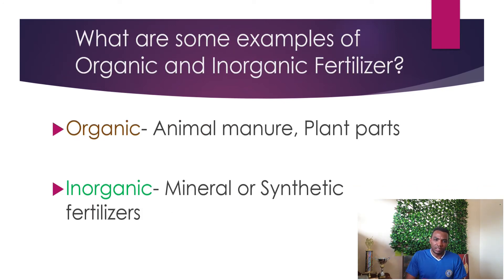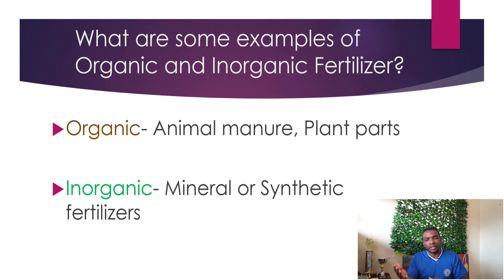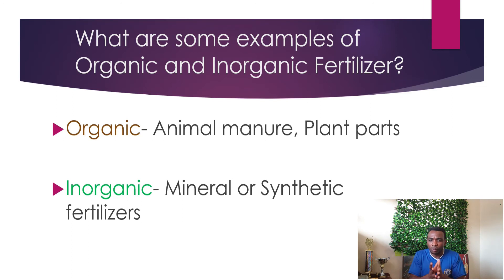As it relates to organic fertilizers, we are talking about animal manure and plant parts. For animal manure, we are talking about common chicken manure and goat manure that you can put around your plants. For plant parts, we are talking about composting — taking plant leaves and putting them around your plants to break down and add nutrients to your soil. You can also use kitchen peelings like banana peels and orange peels, put them in a compost, let them break down, and add that to your soil.